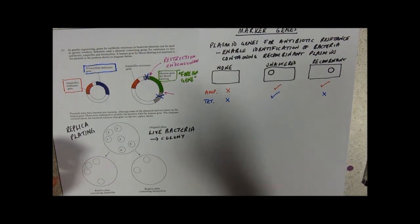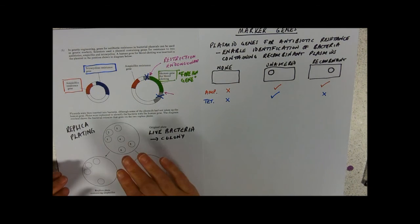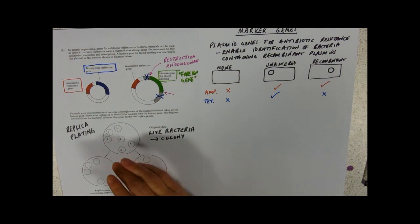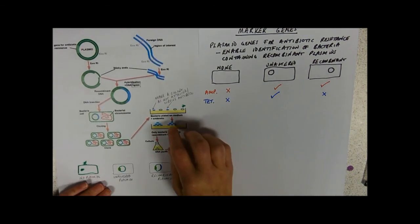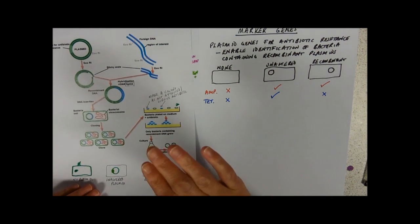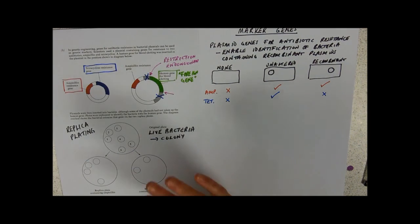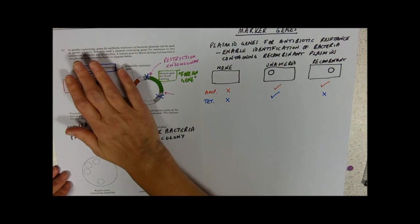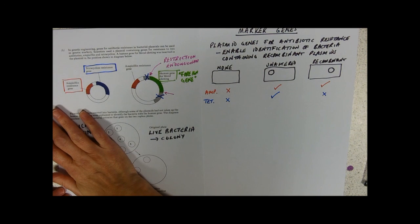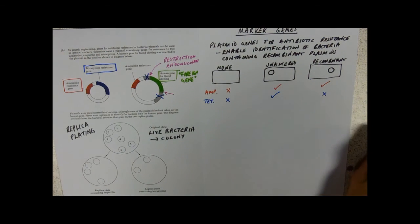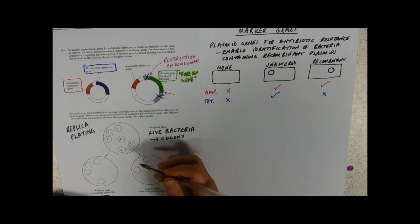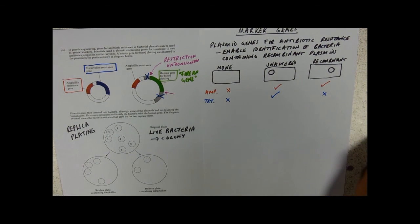And then you need to copy those colonies. So they kind of get a little velvety pad that picks up some, if you just look back at this picture, some of these sorts of bacteria from the top of the colony. And then if you press it onto a new agar plate, those individual bacteria will make a colony. So you can copy a plate across. So we put our pad on, we press it on this one.